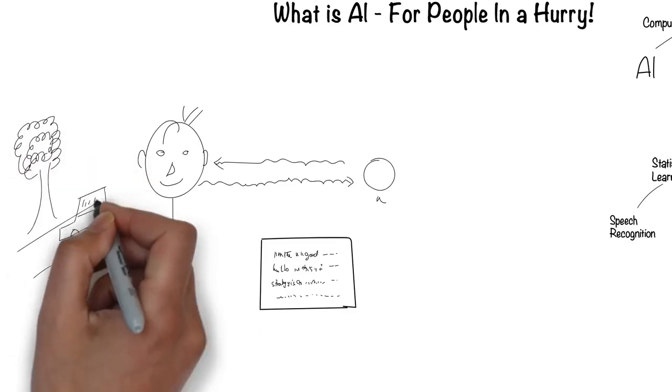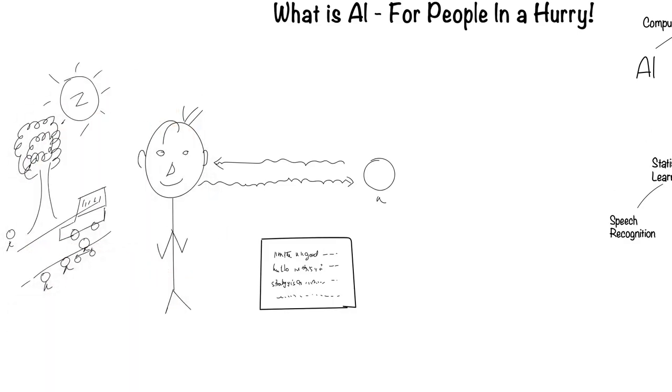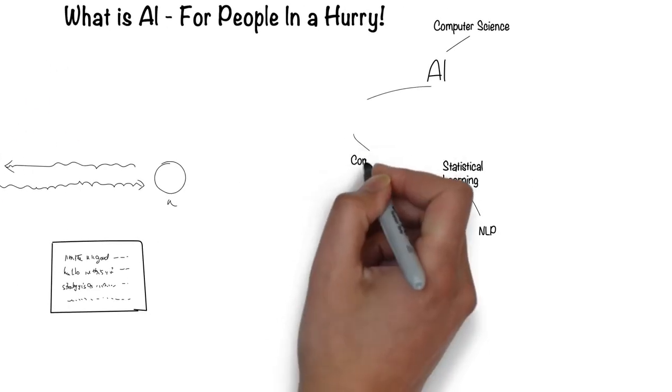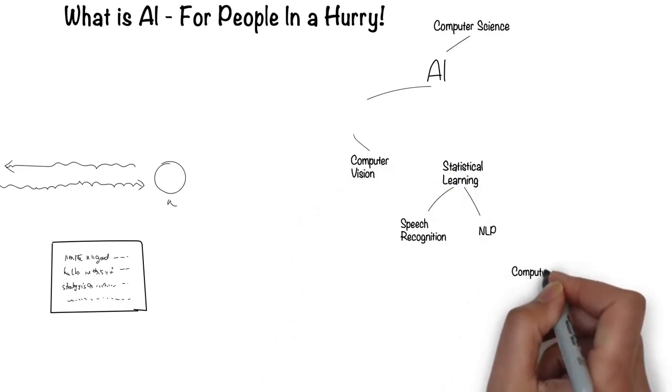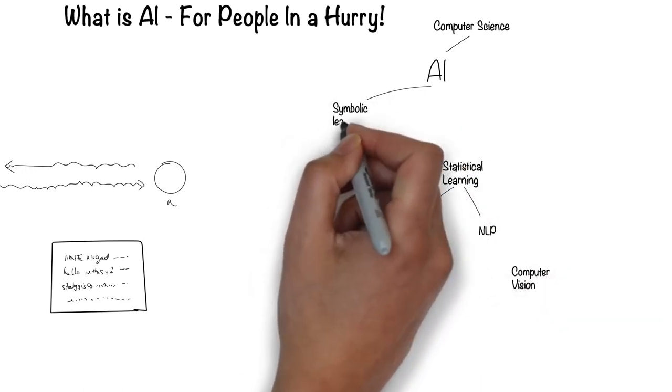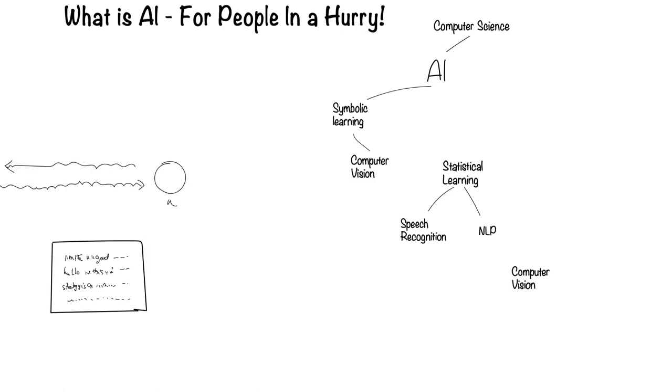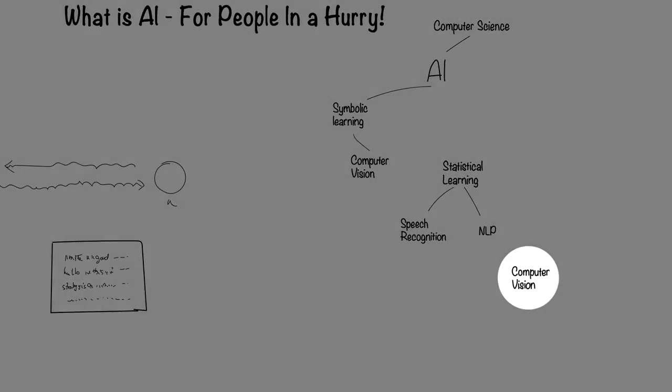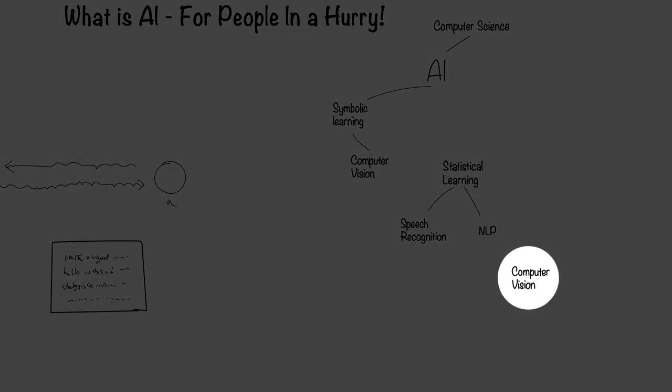Humans can see with their eyes and process what they see. This is the field of computer vision. Computer vision falls under the symbolic way for computers to process information. Recently, there's been another way, which I'll come to later.